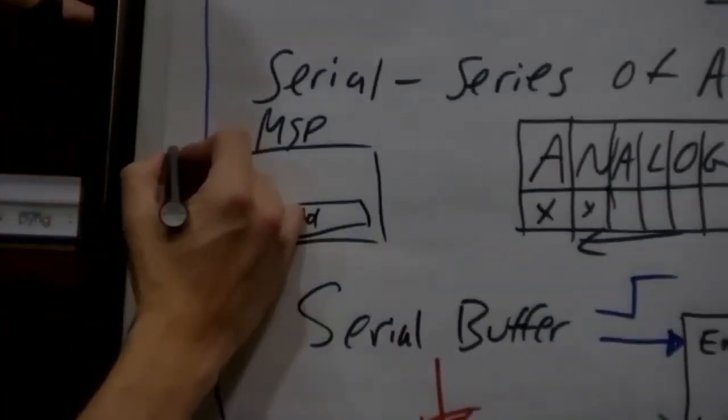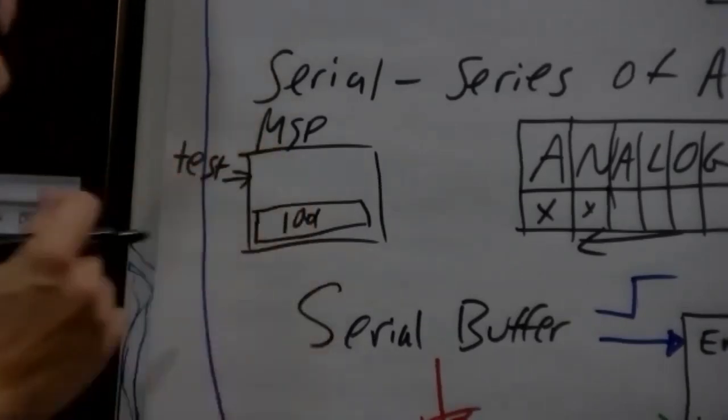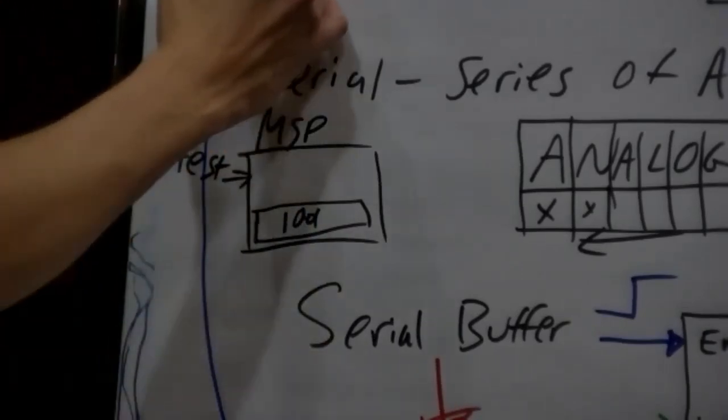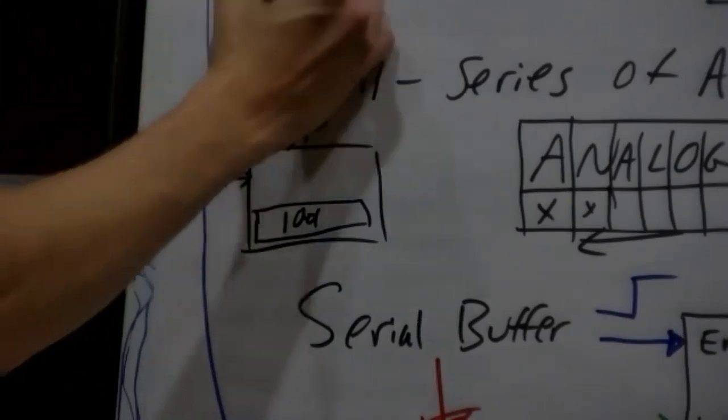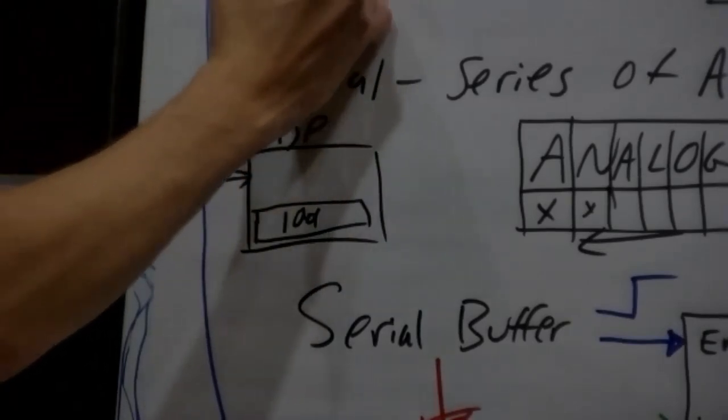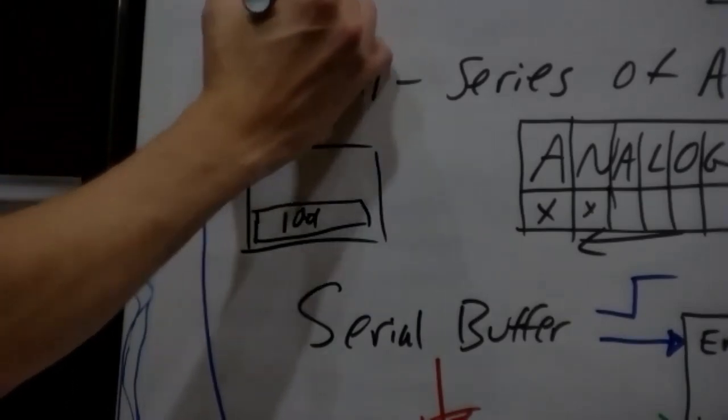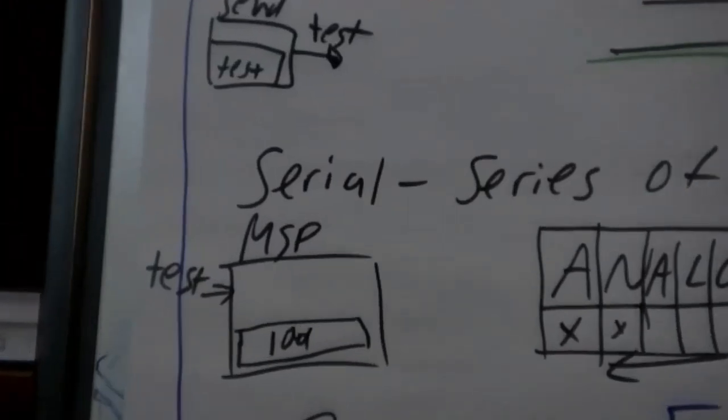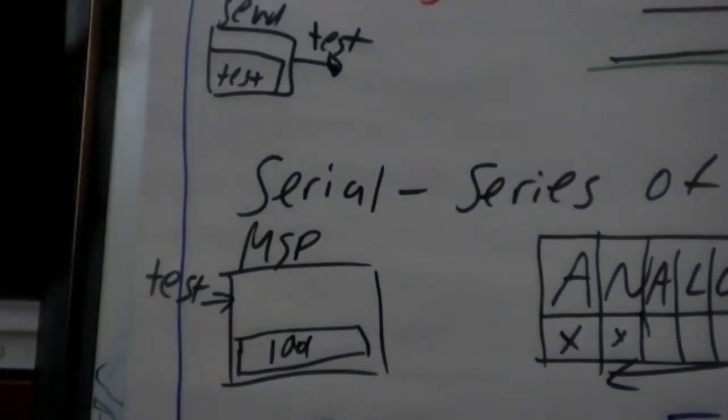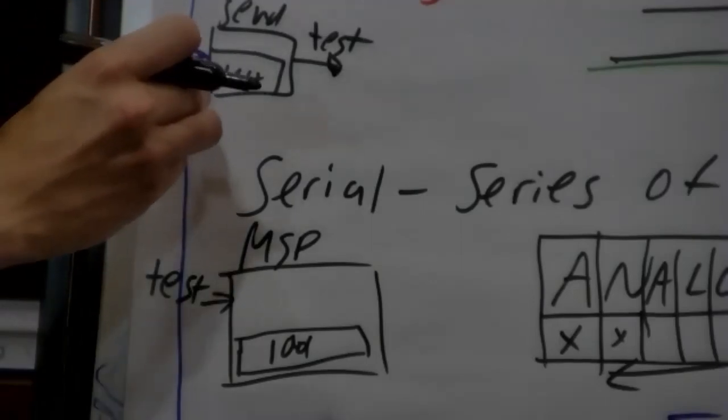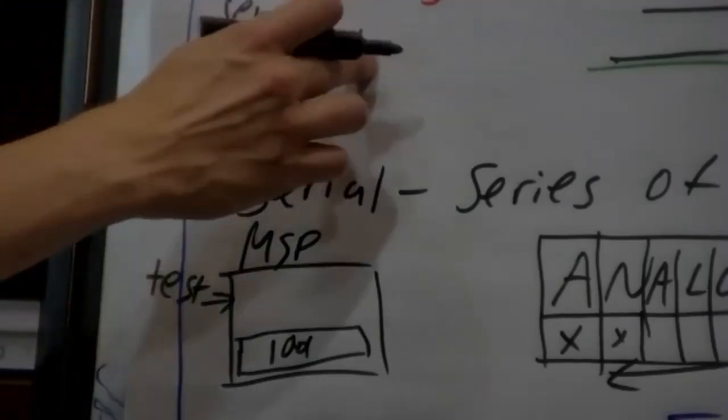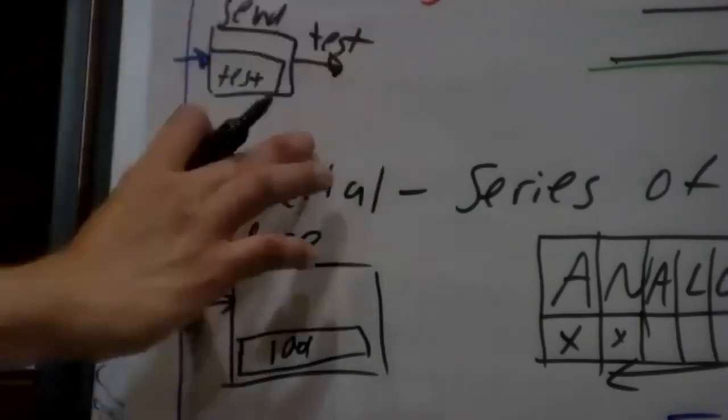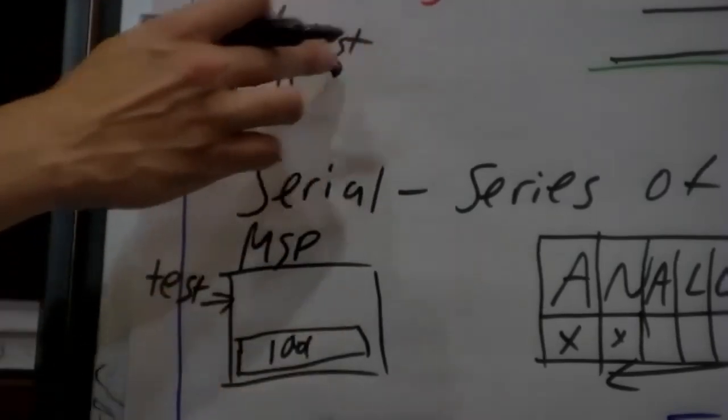So say your signal name is test. You've created it somewhere else—you have like an MSend or a serial send—and you put test into this test signal. Sorry, I'm writing really small here. You've created that over here, and then all you do is you run this into here.